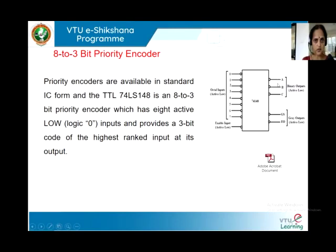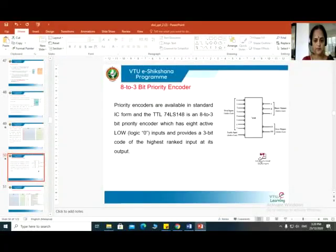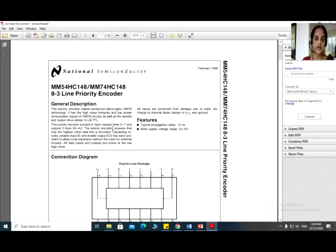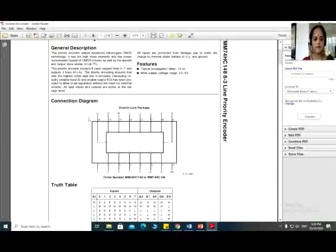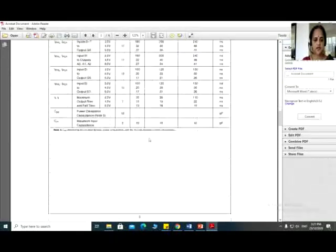We have outputs A which are all active-low outputs. We also have output pins GS and EO, which are active-low output pins. Here is the datasheet for the 74LS148, manufactured by National Semiconductors. National Semiconductor is not the only manufacturer — there are others who manufacture this IC — but for the 74LS148 or 74XX148, the pin diagram and many of the electrical features remain common. This is the truth table for the 148, along with a list of electrical characteristics.